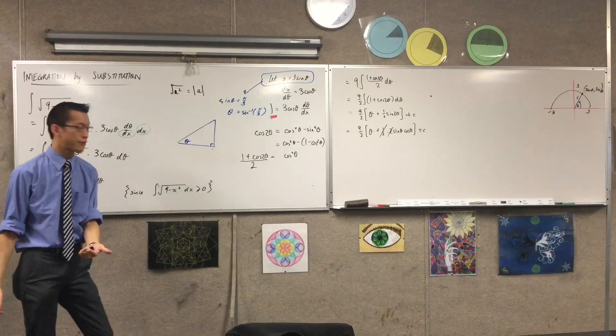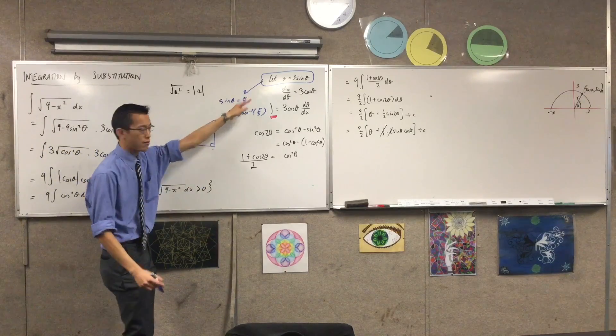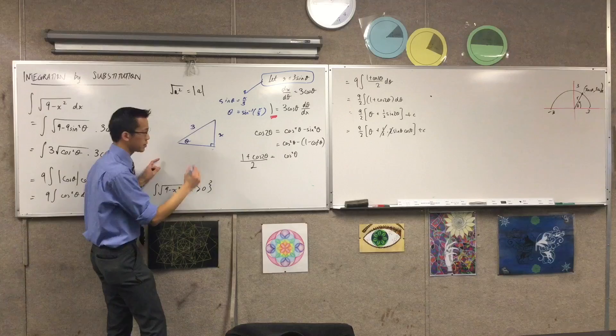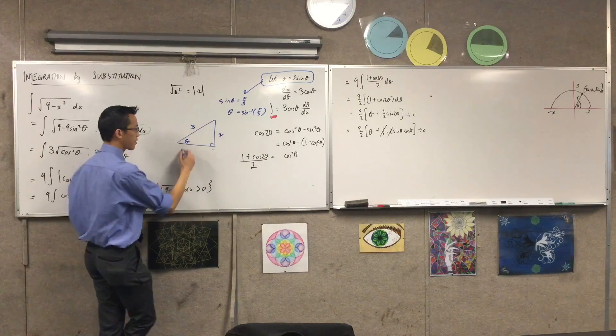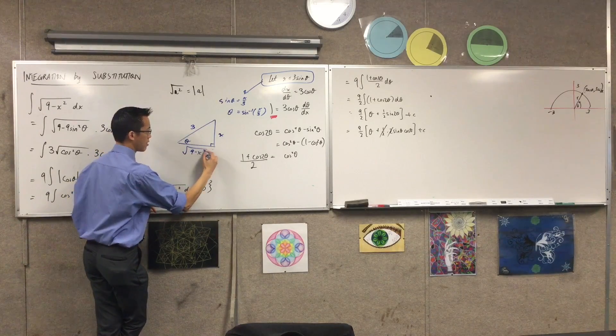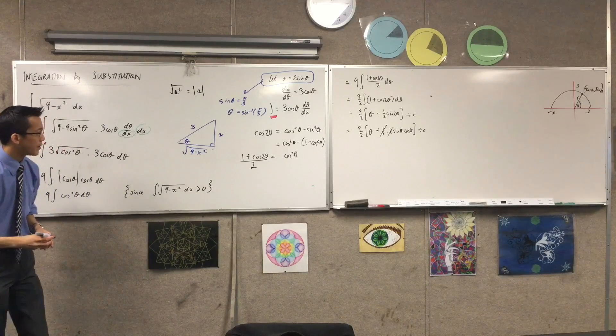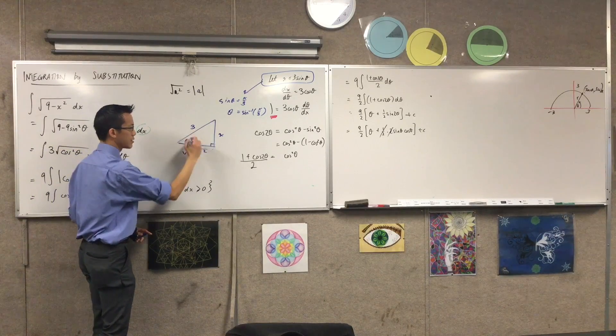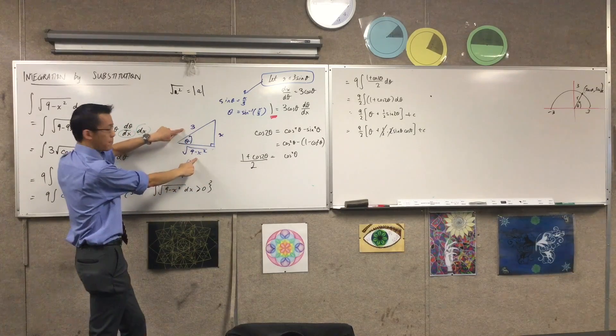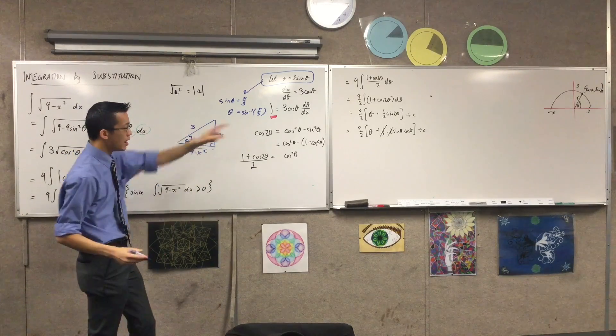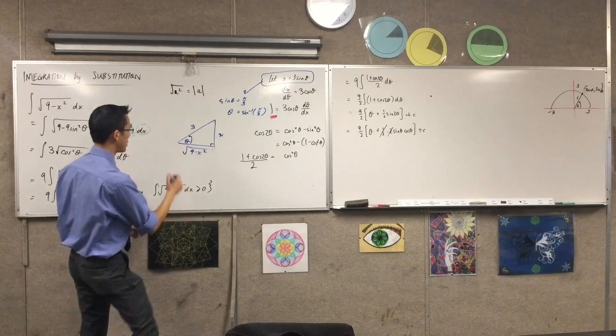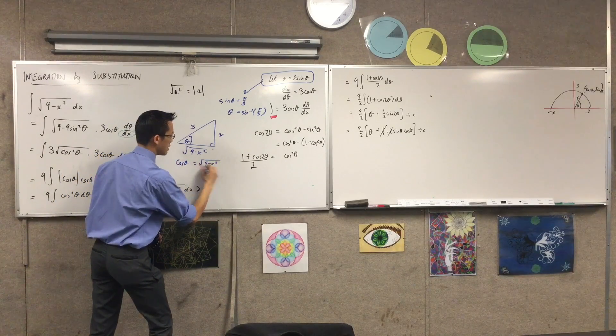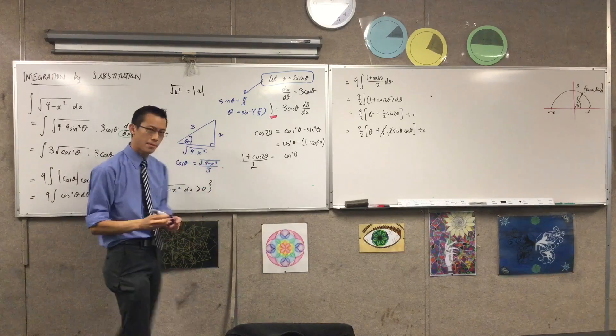I can draw a triangle which has theta in it. If sine theta is x on 3, that's opposite on hypotenuse, and you can use Pythagoras to work out that the missing side is square root of 9 minus x squared. So, therefore, if I'm looking at sine theta, I know what that is. If I'm looking at cos theta, it's adjacent on hypotenuse. That's what cos theta is. So, I can substitute that in by saying, in this triangle, cos theta is equal to this.